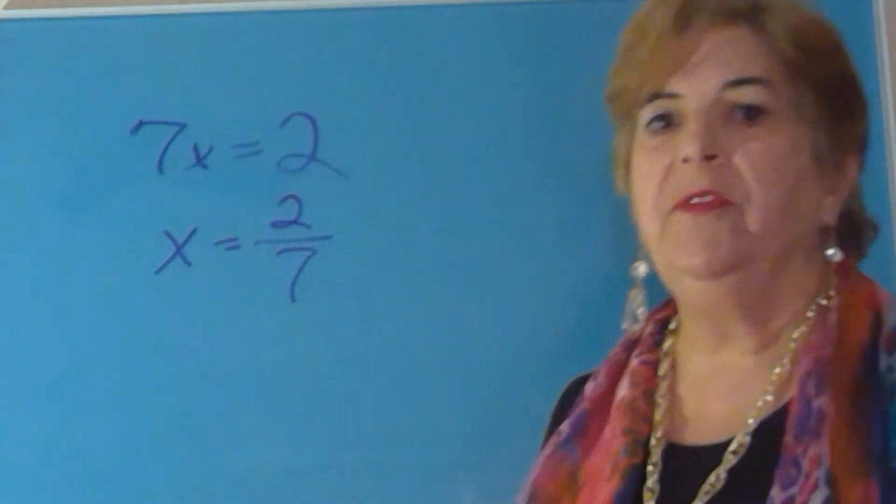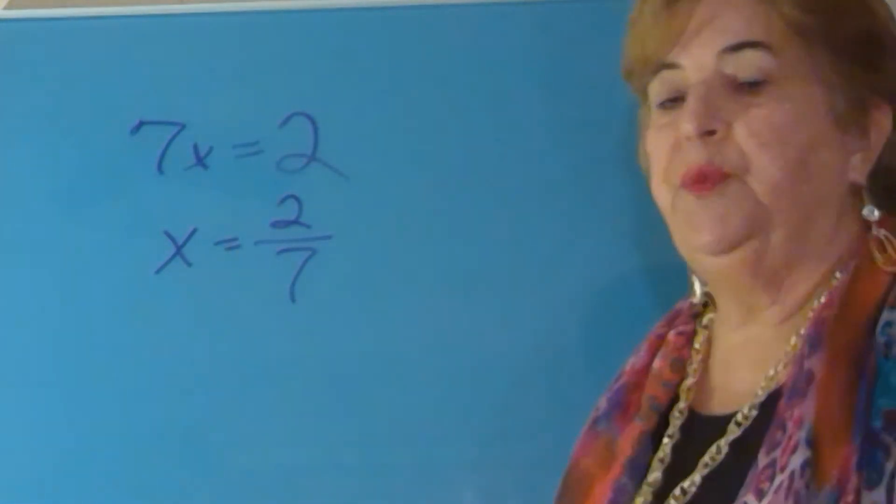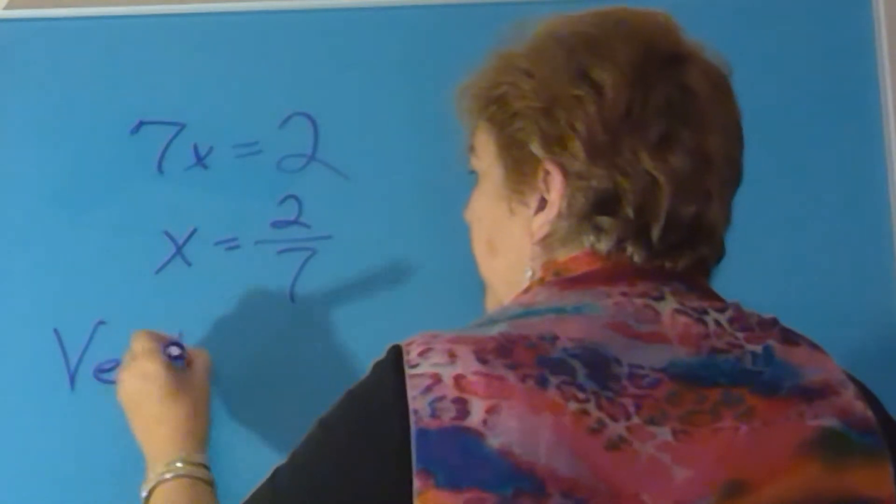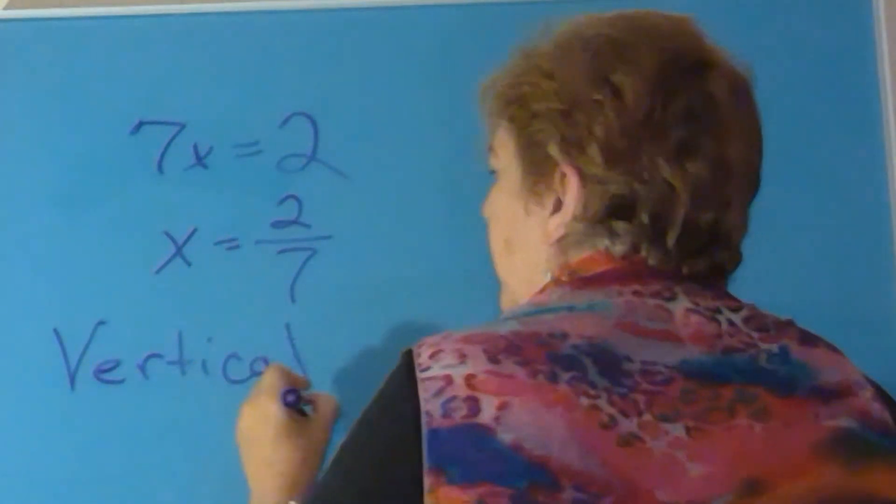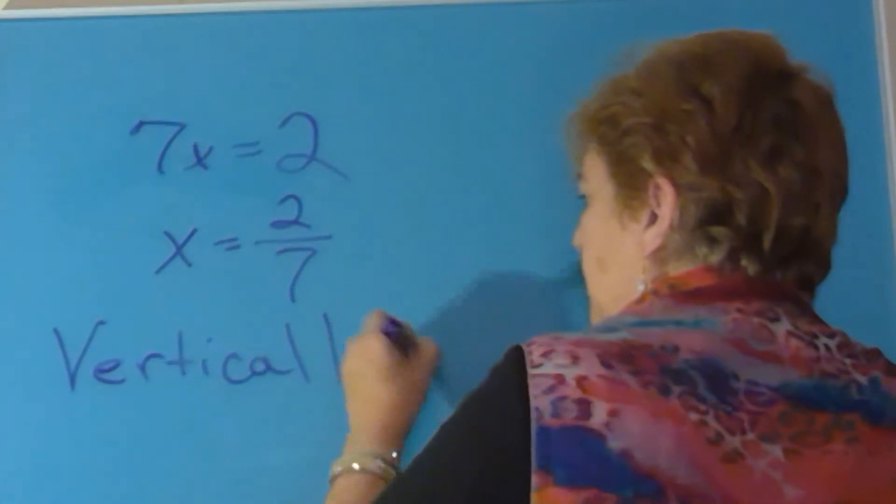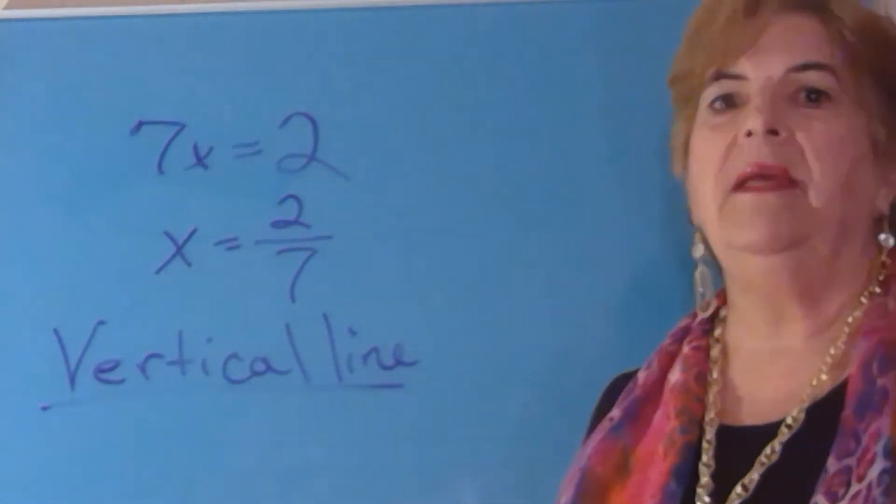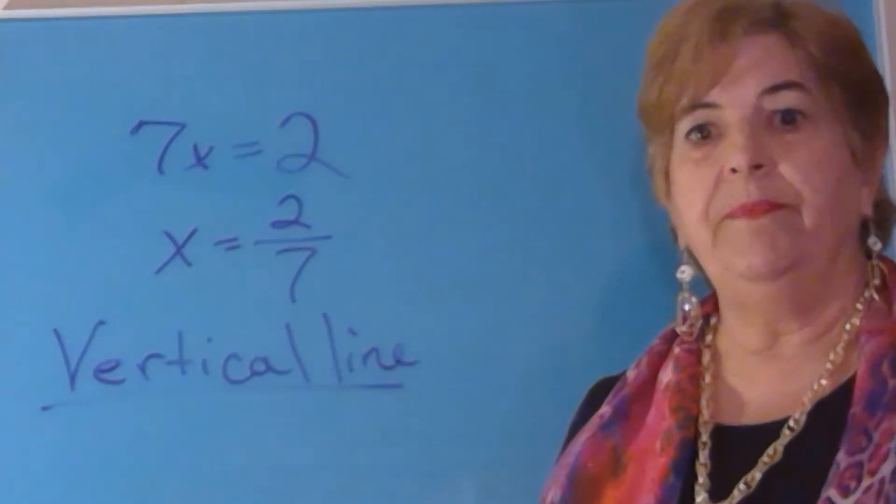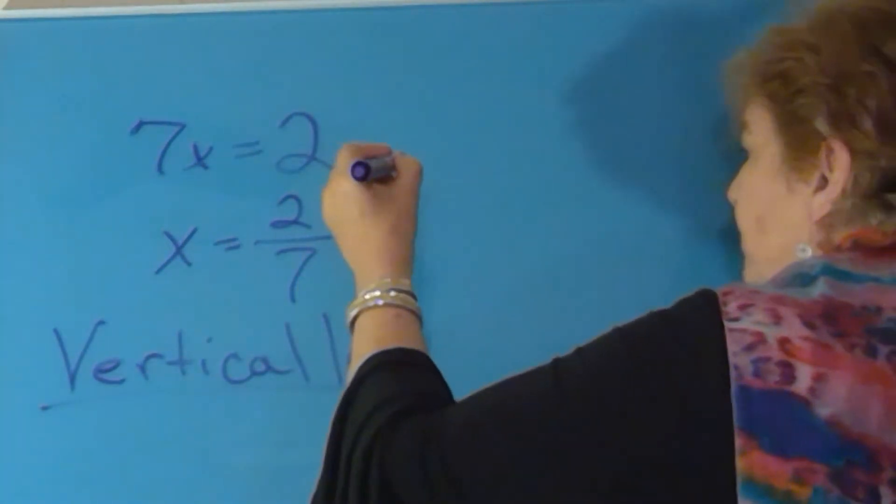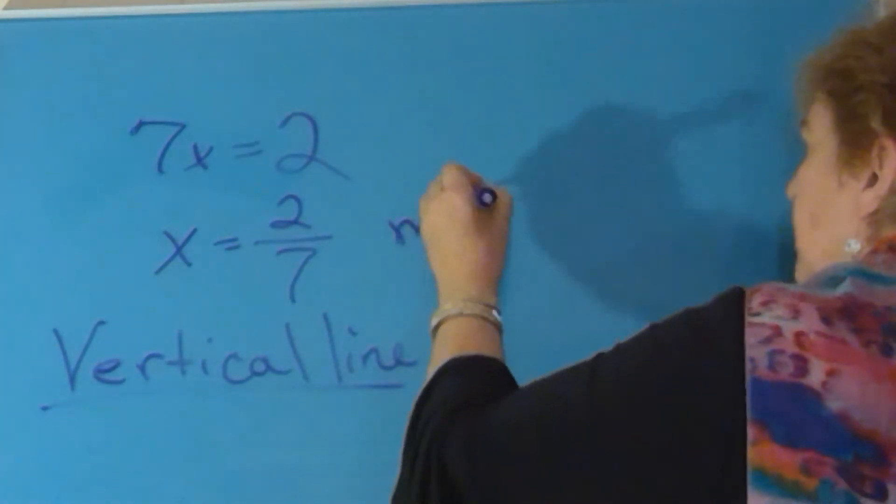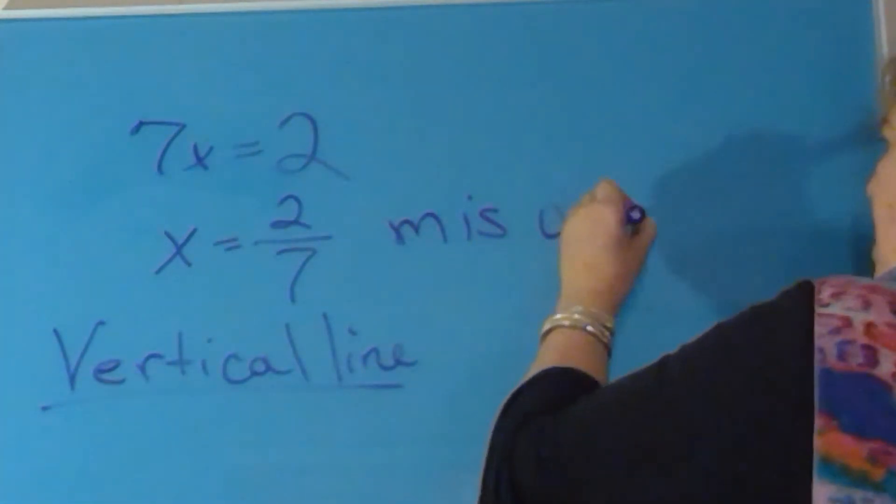But either way, what you need to do is recognize that this is a vertical line. Any line that has an equation missing y is a vertical line. The slope of a vertical line is undefined.